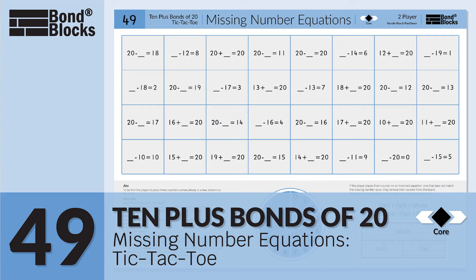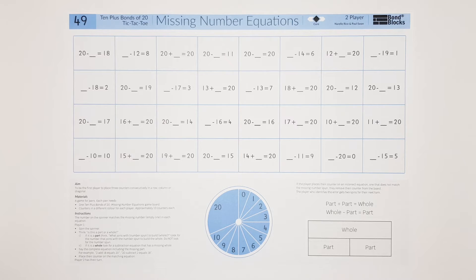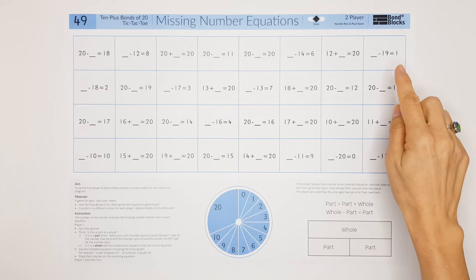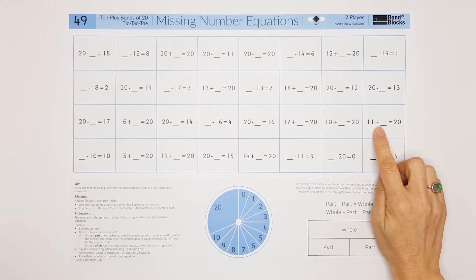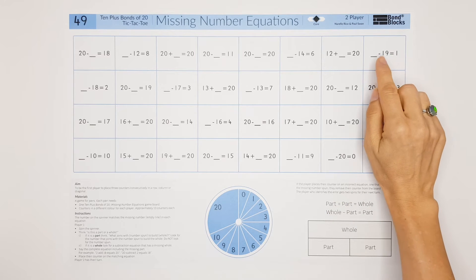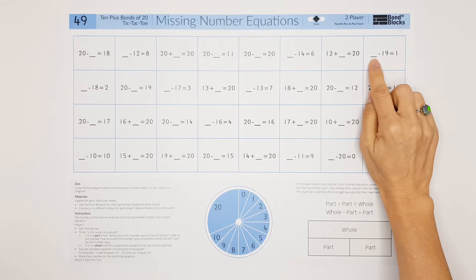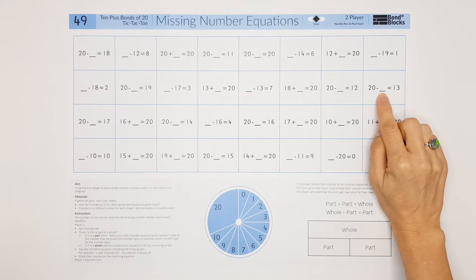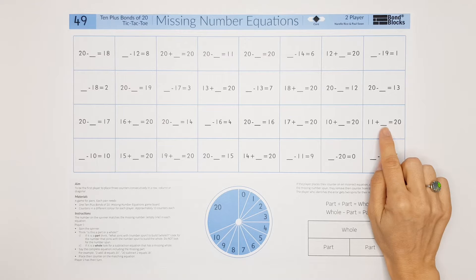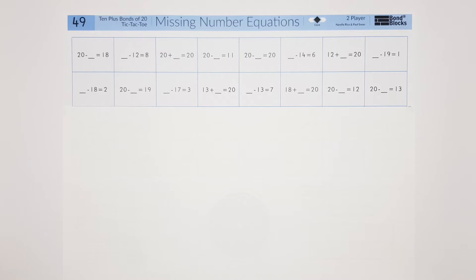Welcome to Activity 49. In this activity we will be using part-part-whole to find missing numbers in subtraction equations and addition equations. In the subtraction equations, the missing number can be in the whole position or in the part position. In the addition equations, the missing number is in the part position.